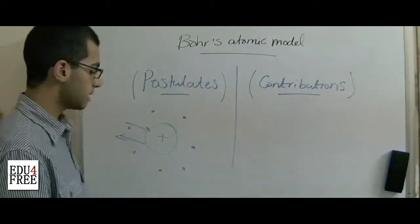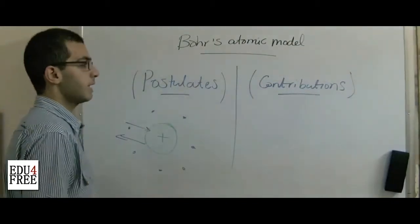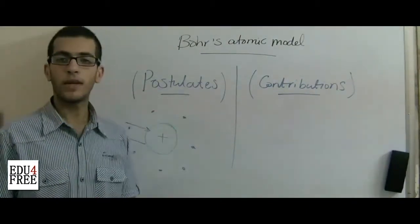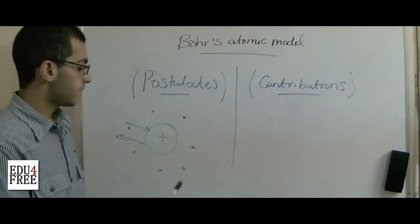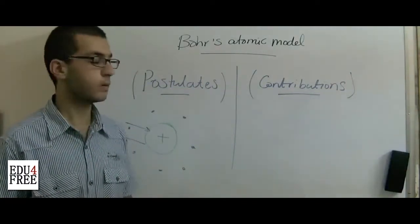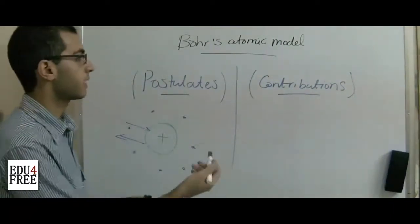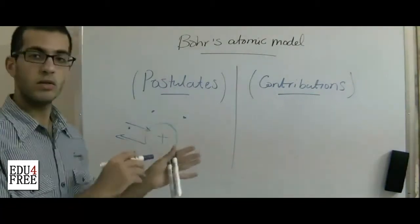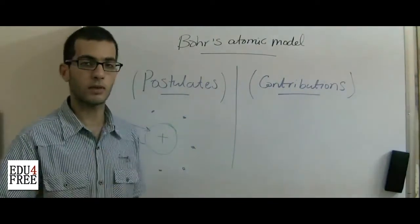Let's go to the contributions — the new things Bohr added to his atomic model. The first contribution: he said that electrons orbit around the nucleus without the radiation or absorption of any type of energy. By this point, he rejected everything Maxwell had said about Rutherford's atomic model regarding the destruction of the atomic system due to emission of radiation during orbiting.